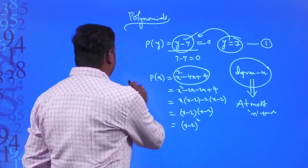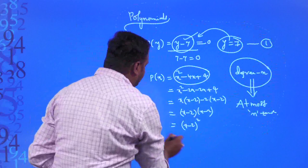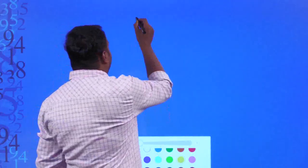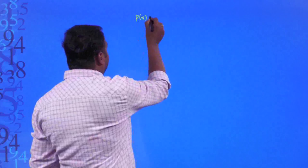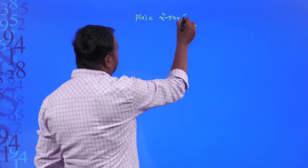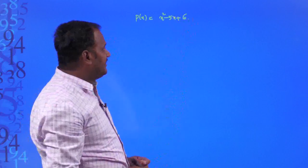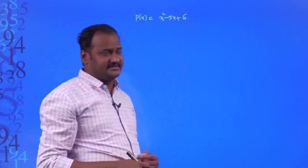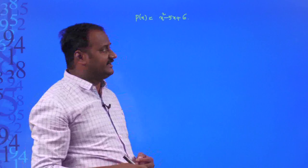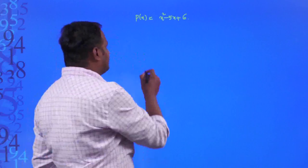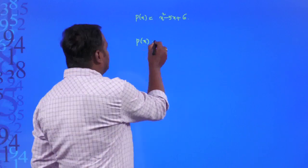Let us take one second degree polynomial: p(x) = x² - 5x + 6. Can we draw this on a graph sheet? First let us consider a first degree polynomial, p(x) = x + 5, to understand how linear polynomials are drawn.